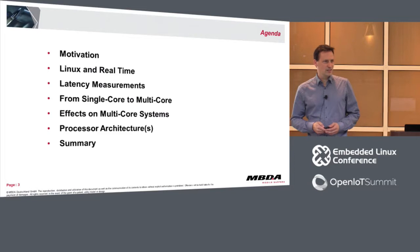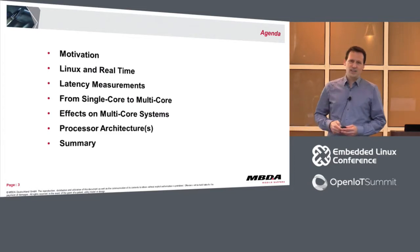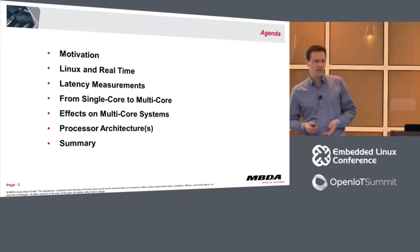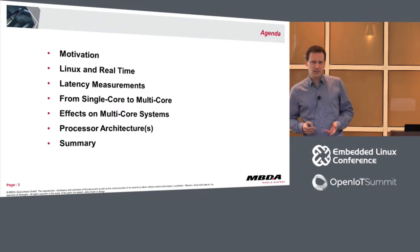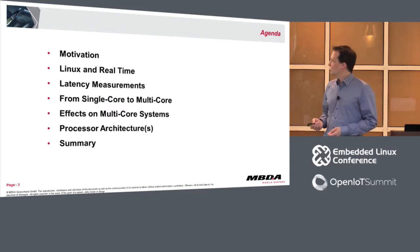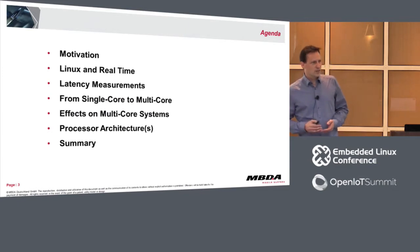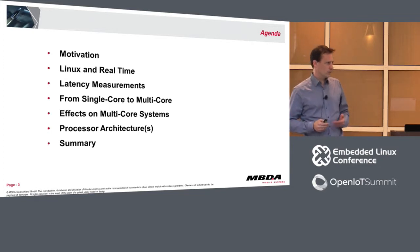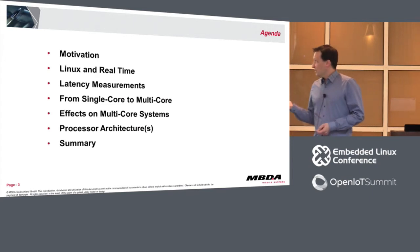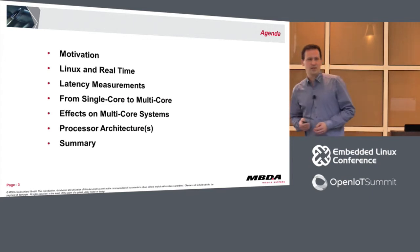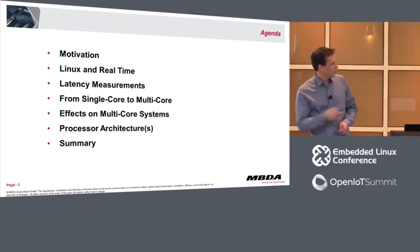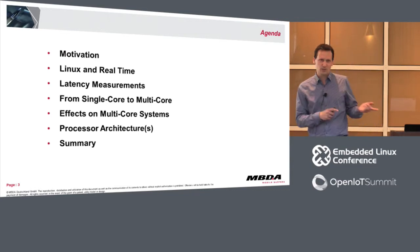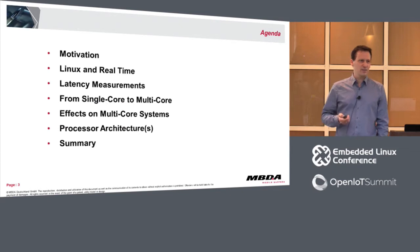A few words about the agenda. I already started with the motivation. At the beginning I need to say a few words about Linux and real-time, and about latency measurements. Then we come to the second part of the presentation — the interesting one — the migration from single-core to multicore. You will see a lot of histograms. There are many effects on multicore processors you should be aware of, and it's mandatory to know a little bit about the processor hardware architecture. Of course, at the end there will be a short summary.